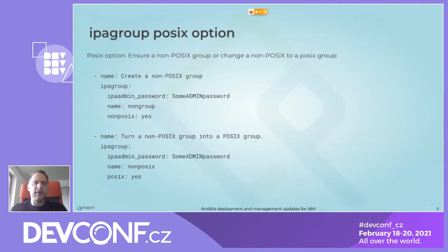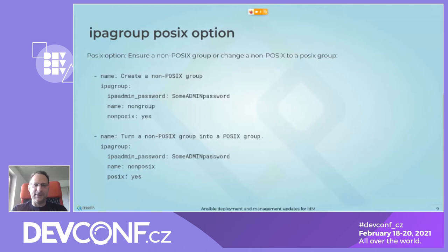There are also enhancements in the management modules. For ipa_group, the posix option has been added. It is now possible to ensure a group is a non-posix group, or to change from a non-posix to a posix group. The second operation cannot be completely idempotent because it changes the type, but it will not fail on the second try.